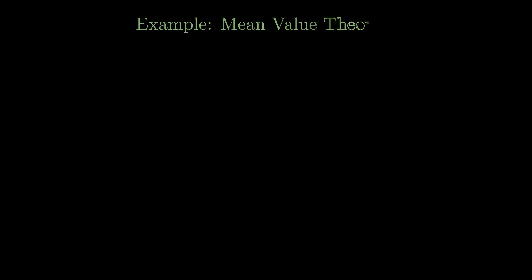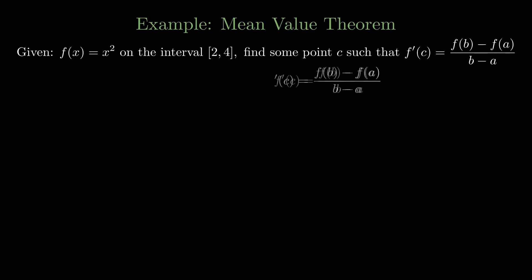So for problems here, we can try to solve for this point, given a function and an interval such as x squared on the interval from 2 to 4. We want to see where the derivative and the average rate of change are the same on this interval.